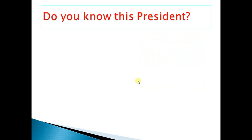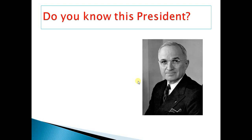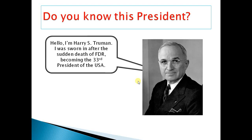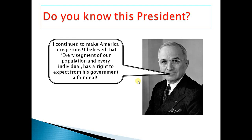Moving on — do you know this president? This is Harry S. Truman, sworn in after the death of FDR, becoming the 33rd president. So Roosevelt was the 32nd and Herbert Hoover the 31st. Truman wants to continue FDR's New Deal and believes he can continue to make America prosperous through a strong belief in democracy. He is a democratic president.